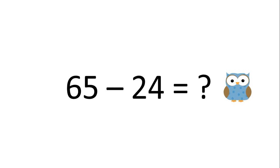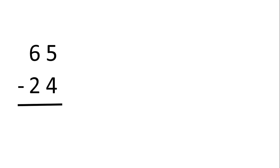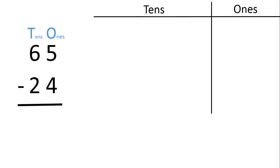So number of oranges equals 65 minus 24. So we must calculate 65 minus 24. Let's begin by lining up the numbers like this. The larger number 65 goes on top and the smaller number 24 is written below it. Let's represent 65 using place value blocks. The number 6 in the tens place represents the number 60.